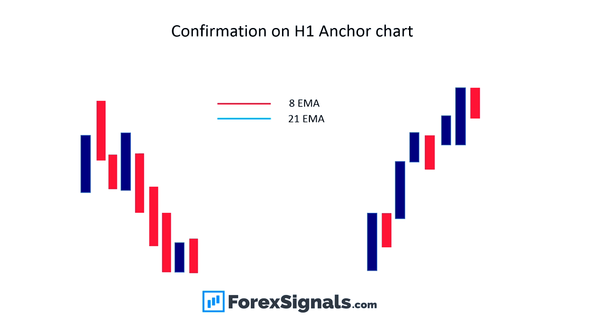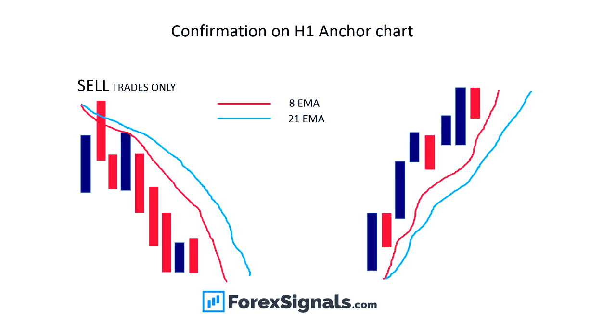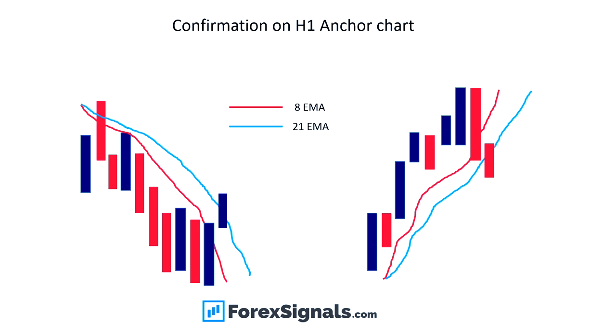We use two EMAs — the 8 EMA and the 21 EMA. Here you can see the 8 EMA in red is pointing down and is below the 21 EMA, meaning we're looking for sell trades only. To the right of the screen, the EMA is pointing up and is above the 21 EMA, with price above both EMAs — so we're looking for buy trades only. Notice that where price has moved above the moving averages in a sell context, or below in a buy context, there is no trade setting up — price has to be the right side of the moving averages in the direction of the trend.